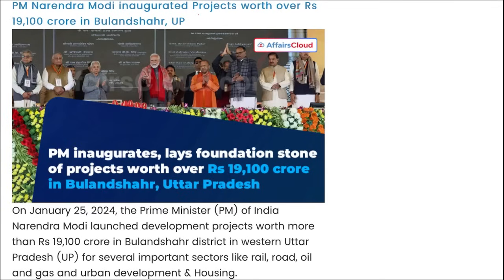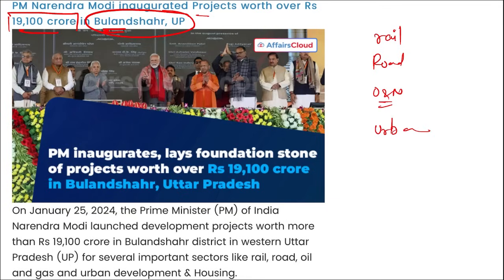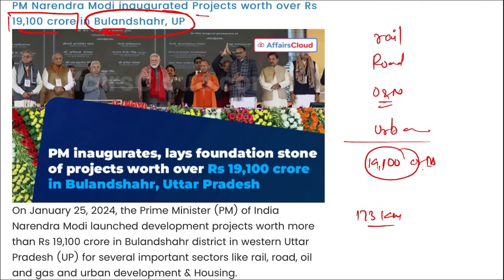PM Narendra Modi inaugurated projects worth over Rs 19,100 crore in Bulandshahr, UP. This Bulandshahr district is in western UP. Projects covered multiple sectors such as rail, road, oil and gas, urban development, and housing development. A 173-kilometer long double-line electrified section was launched, and a rail line connecting Mathura and Palwal section was also launched.